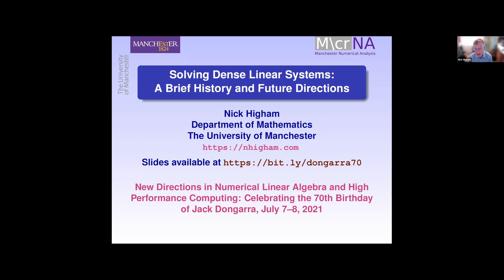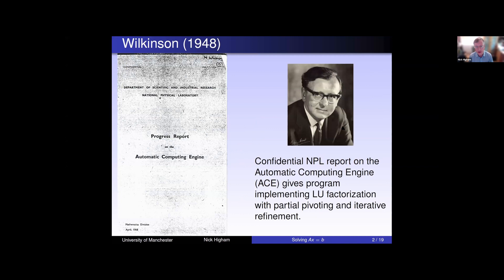So I want to go back to the start of the digital computing era, the 1940s, and ask what was the state-of-the-art method for solving N equations and N unknowns. One way to answer this is to look at a paper by Wilkinson, a technical report written in 1948. Wilkinson was working on building the automatic computing engine at the National Physical Laboratory in Teddington, just outside London. Turing had initially designed this computer, he'd left and gone to Cambridge, and Wilkinson was now continuing the work.